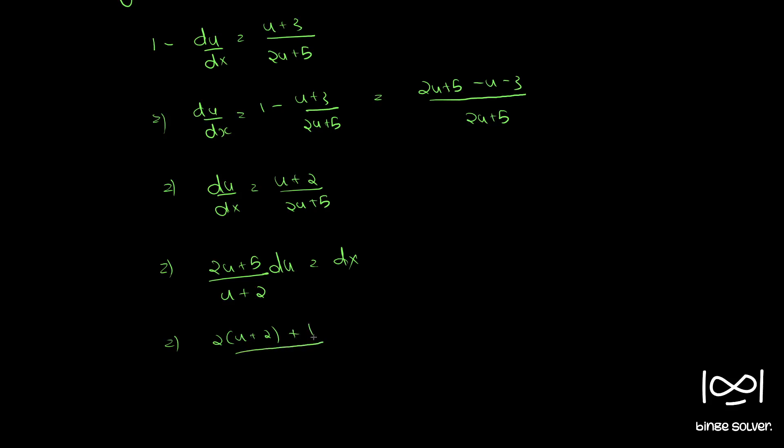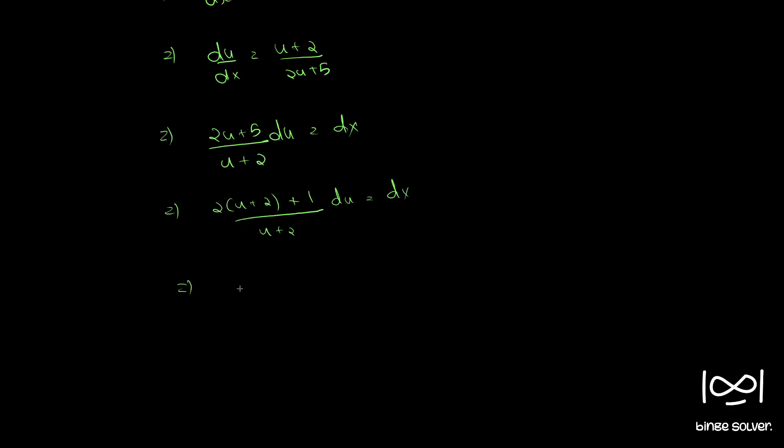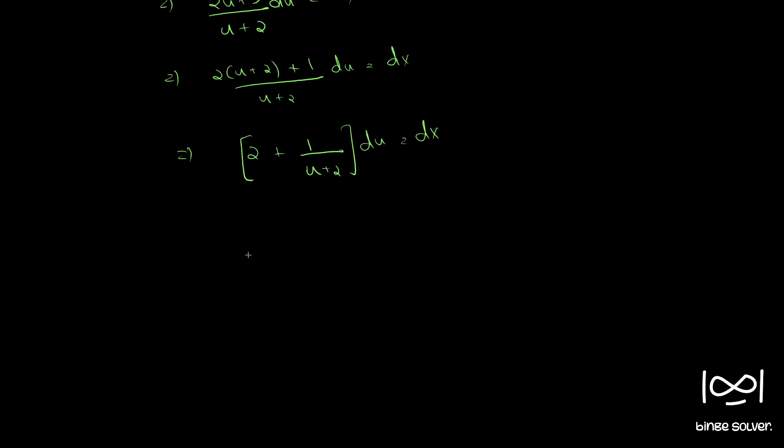We can write this as 2(u + 2 + 1)/(u + 2) du = dx. Opening up, we get (2 + 1/(u + 2)) du = dx.